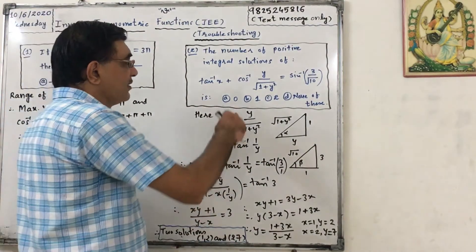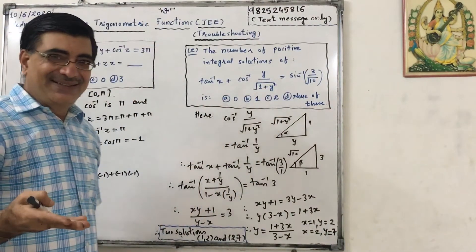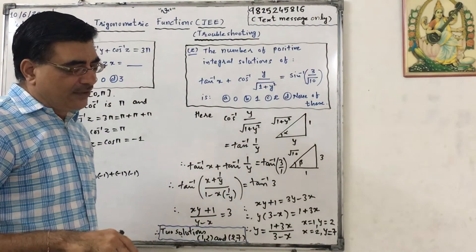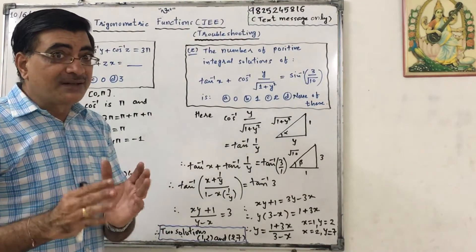First of all, let us convert this cos inverse and this sin inverse into tan inverse. Okay, for that we can use formula, but the easy method is to prepare right angle triangle.